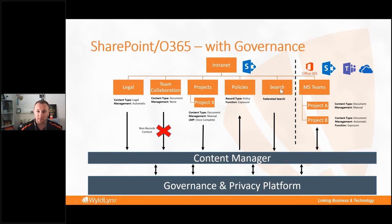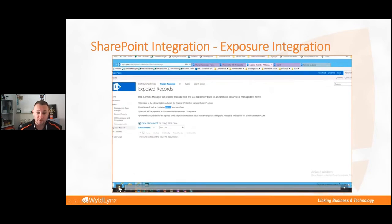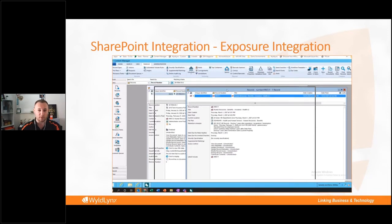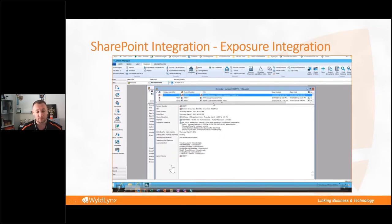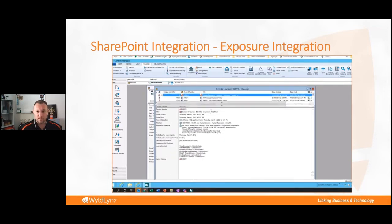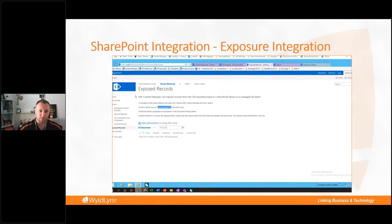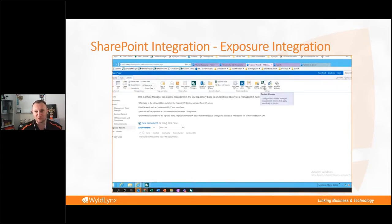Carl shows a video demo of exposing records. Using an HR folder example in Content Manager, documents are configured via the SharePoint integration and copied across to SharePoint. The process is driven by a string search — for example, show everything in a folder — which can be as simple or complex as needed. As more documents are added to the container matching the search rule, they automatically expose to SharePoint behind the scenes with no manual updating required.